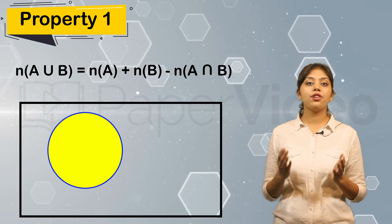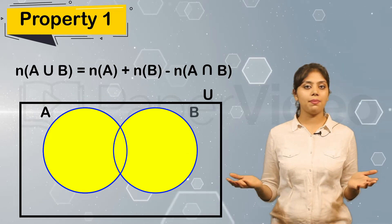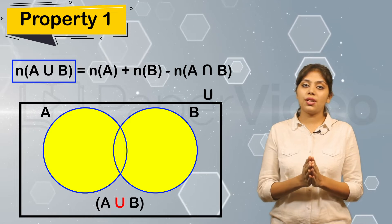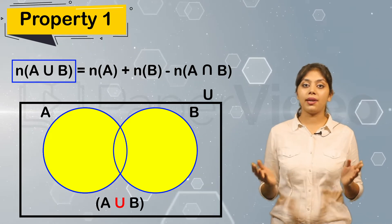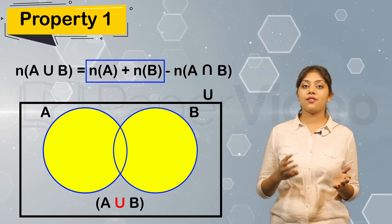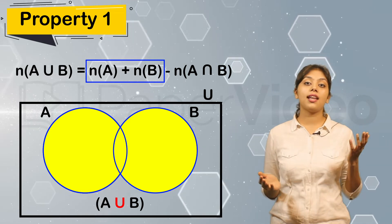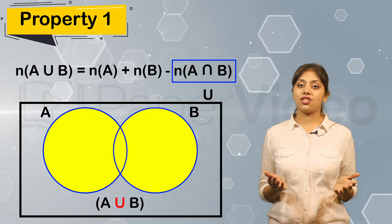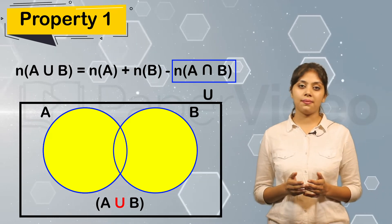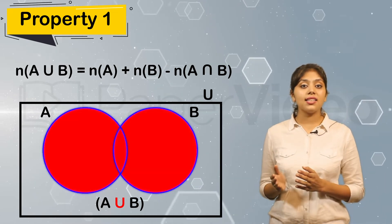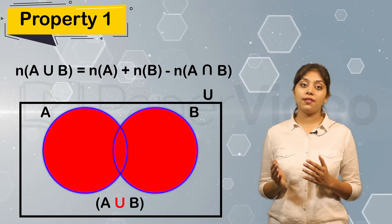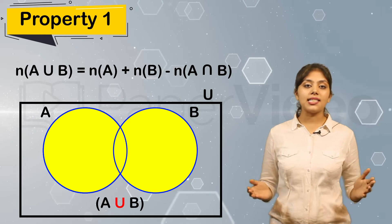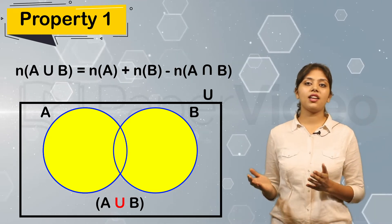Consider a Venn diagram of the union of two sets A and B. If we look at the diagram, the cardinality of the union of sets A and B will be equal to the cardinality of set A plus the cardinality of set B minus the cardinality of the intersection of sets A and B. Since we considered the intersection section twice, we subtract it once to get the correct value. This is the first property of cardinality of sets.